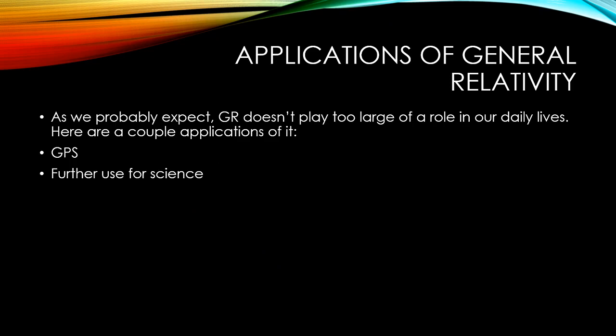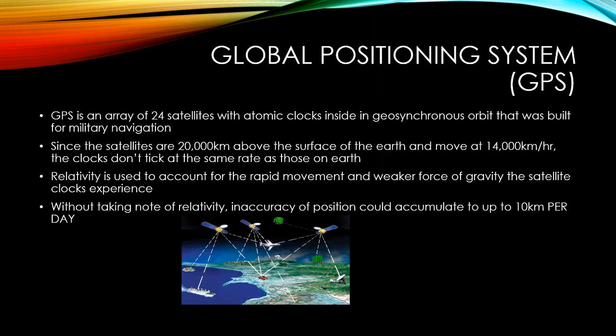Some applications of general relativity include GPS and further use for science, specifically astronomy. GPS is an array of 24 satellites with atomic clocks inside, originally built for military navigation. Since they are 20,000 km above the surface of the Earth and move at 14,000 km per hour, the clocks don't tick at the same rate as those on Earth. Relativity is used to account for the rapid movement and weaker force of gravity the clocks experience, and without taking note of relativity, inaccuracy of position could accumulate to up to 10 km per day.